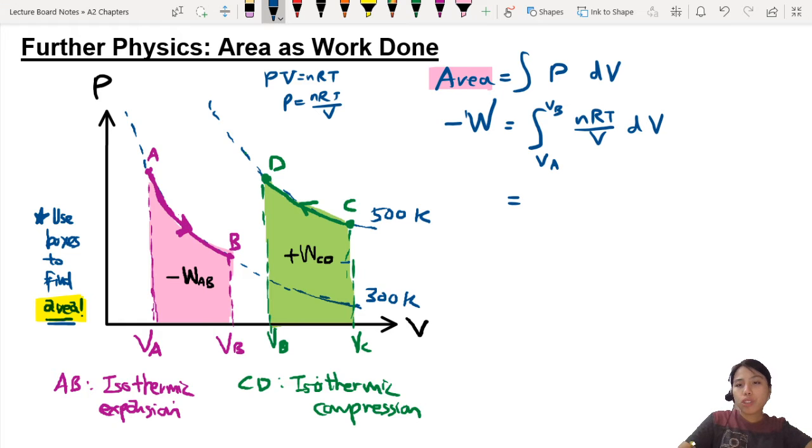So let's put that in here. There's a bunch of constants, so I'm going to take those out. nR are constants. Temperature here, because you are moving along the isothermal curve of 300 Kelvin, so temperature is also constant. That leaves with just 1 over V inside there.